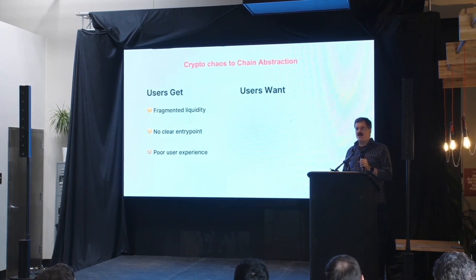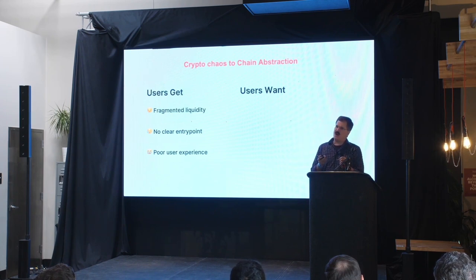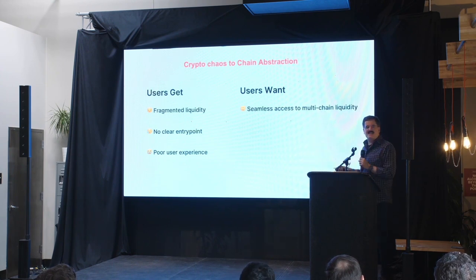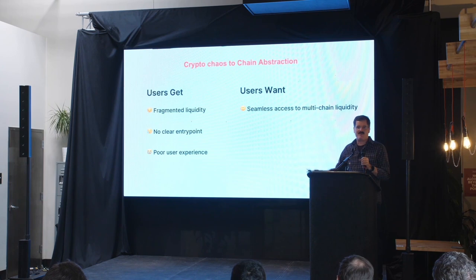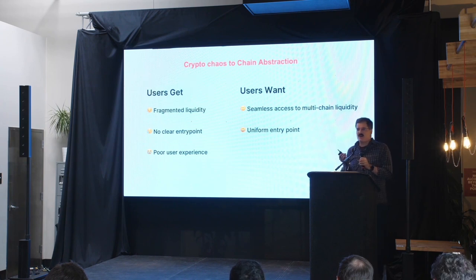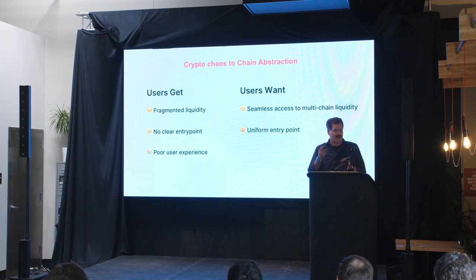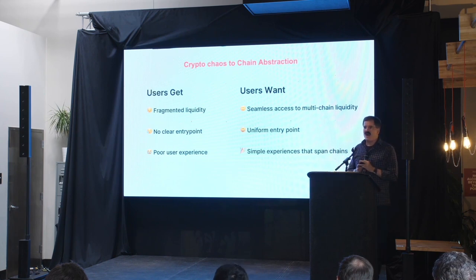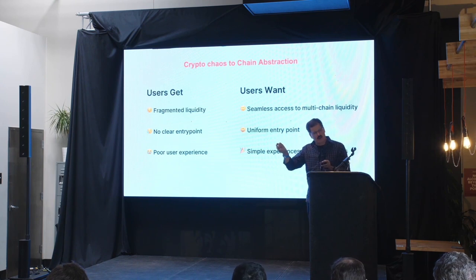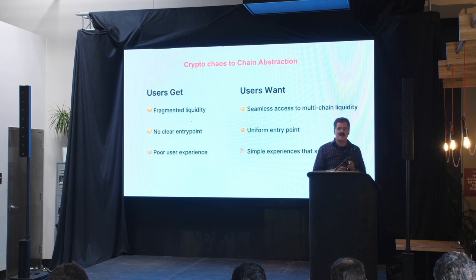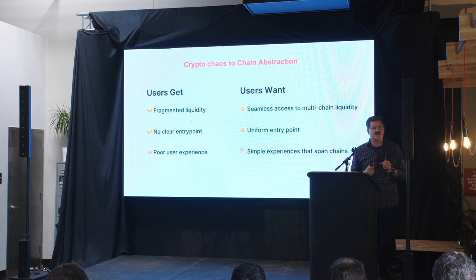What users want is not the moral equivalent of asking 'I'm about to use an app — does it run on Amazon? Does it run on Azure Cloud?' Users want seamless access to multi-chain liquidity. They don't care where it is — they want their assets. They want a uniform entry point and simple user experiences. When I pull out my phone, click the button, and have a hamburger delivered, I'm not thinking about all the currency transactions. I don't have to move my money from my bank to an intermediate pair. I push a button and the hamburger arrives. That's the kind of user experience users want.